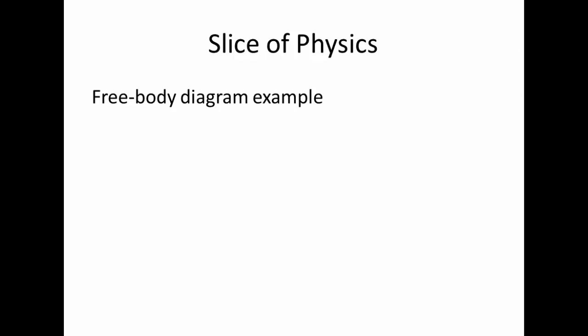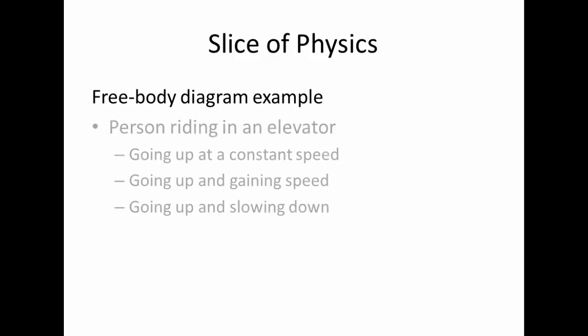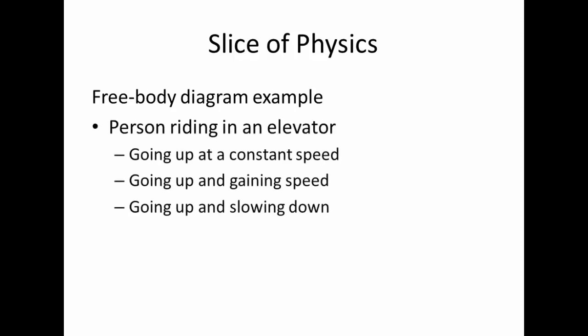Our example today deals with the usual ride we all take in elevator cars. We'll start with an example of somebody riding an elevator car up at a constant speed, and then to give it some context, we'll take the start of the journey at the bottom of the building where the car moves up and speeds up, and then once the person reaches their destination, the car is still moving up but slowing down to stop at the floor that they desired. So we'll take those three examples and discuss the free body diagrams in those situations.